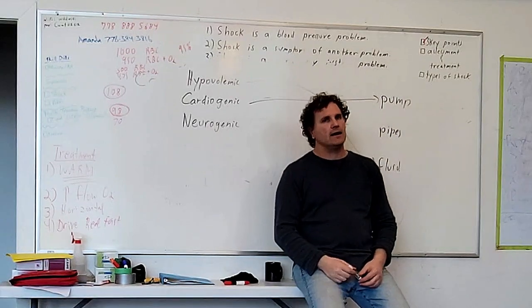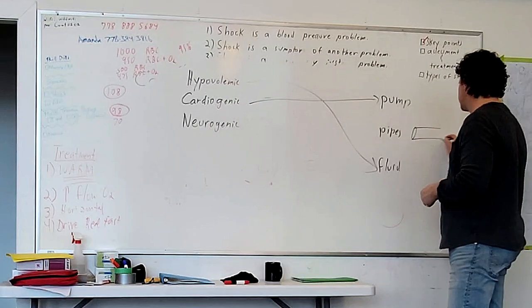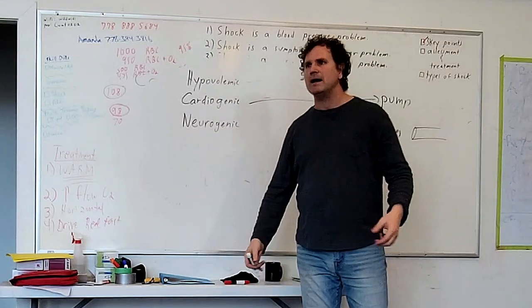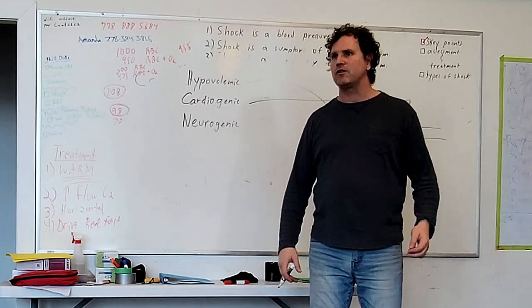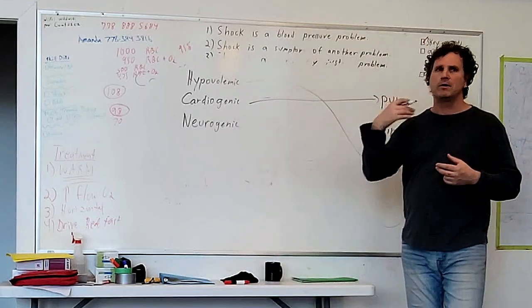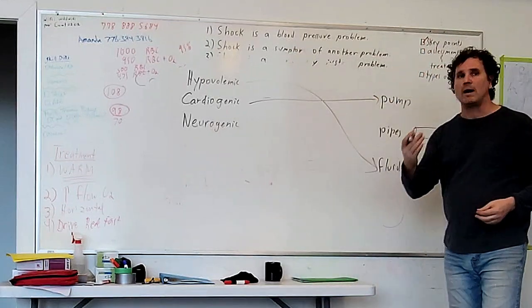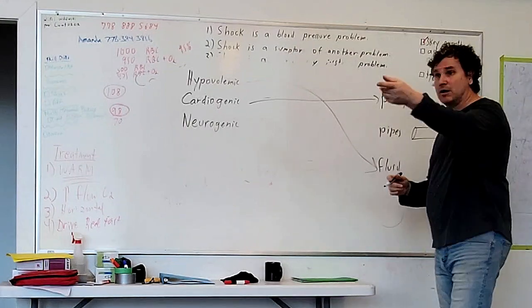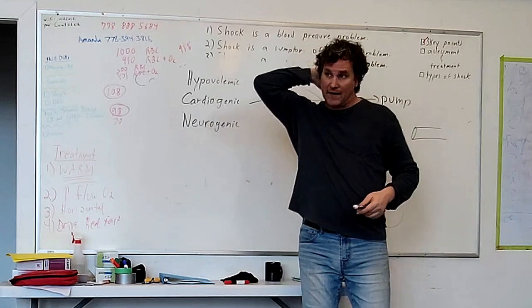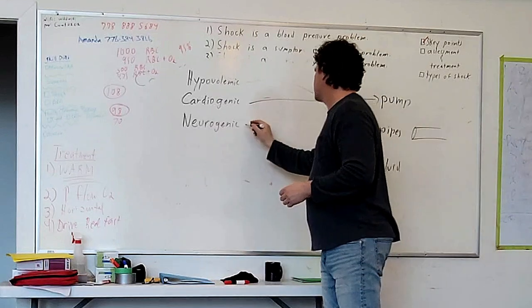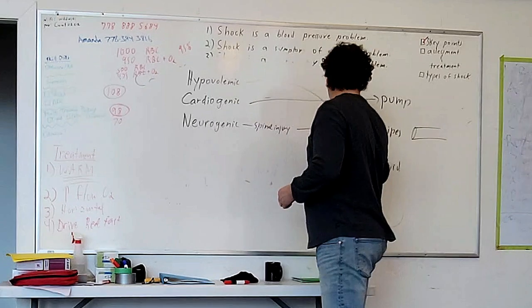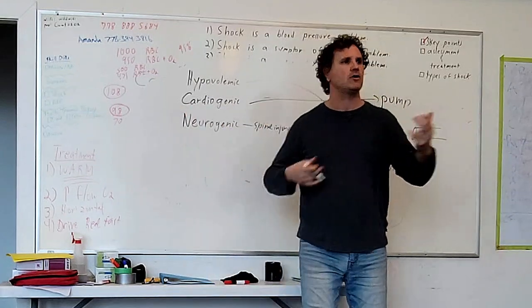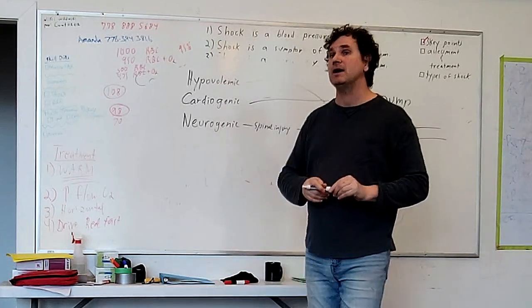Neurogenic shock. We talked earlier about how arteries are always under some tension — that requires a constant signal from the brain saying 'keep constricted.' If that signal is interrupted, suddenly those pipes flop open. What causes that signal to be interrupted? Spinal injury is a big one — it's that highway down the nervous system in the spine. This causes a pipe problem: some of those pipes flop open. Pump is working fine, fluid is normal, but you've now got a bigger container to move fluid through.